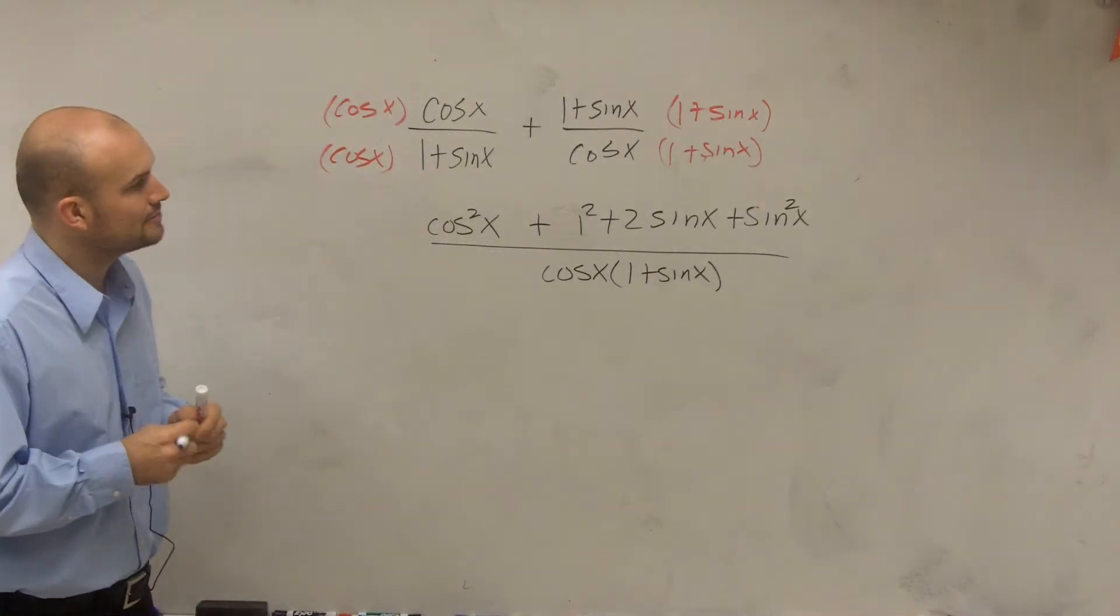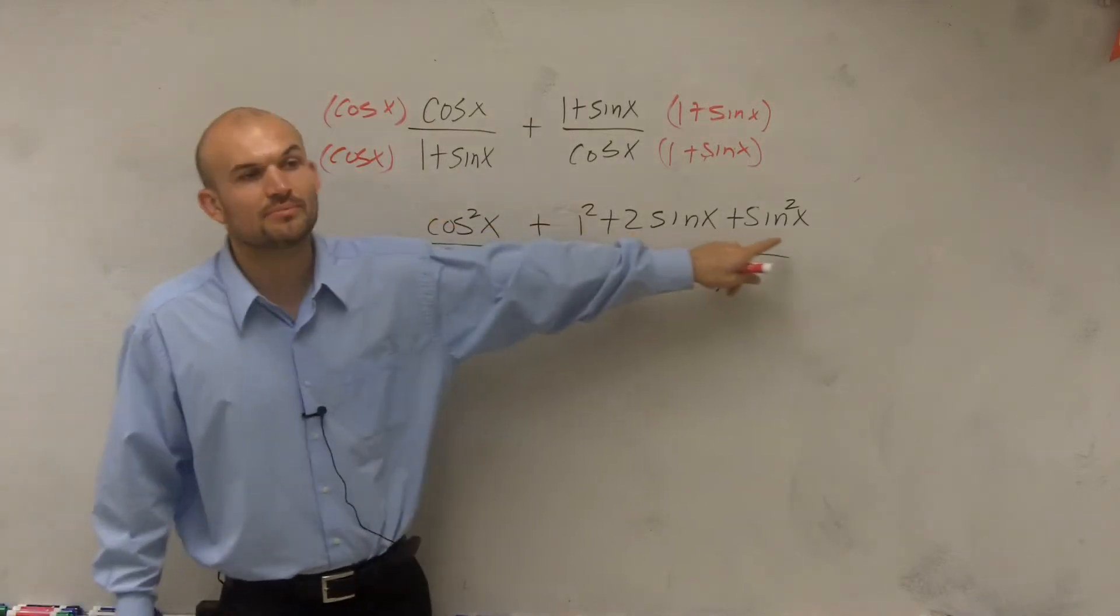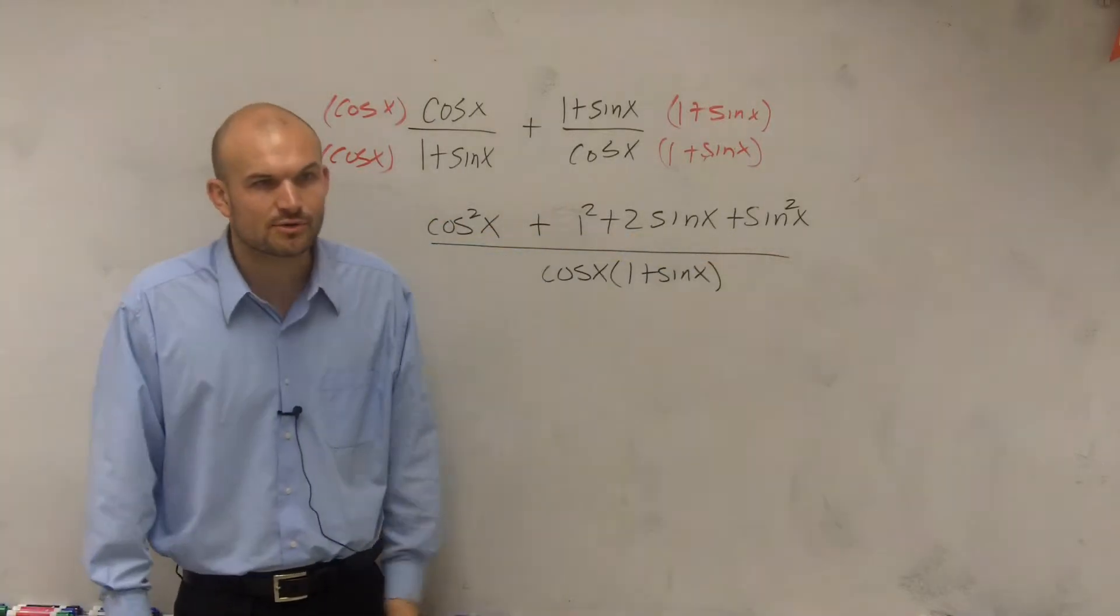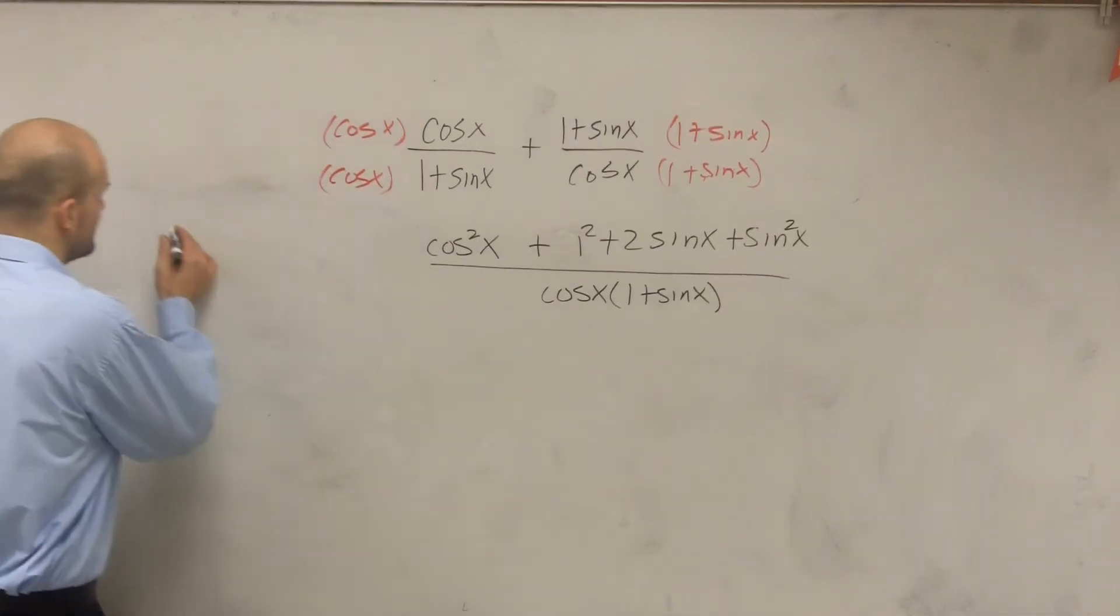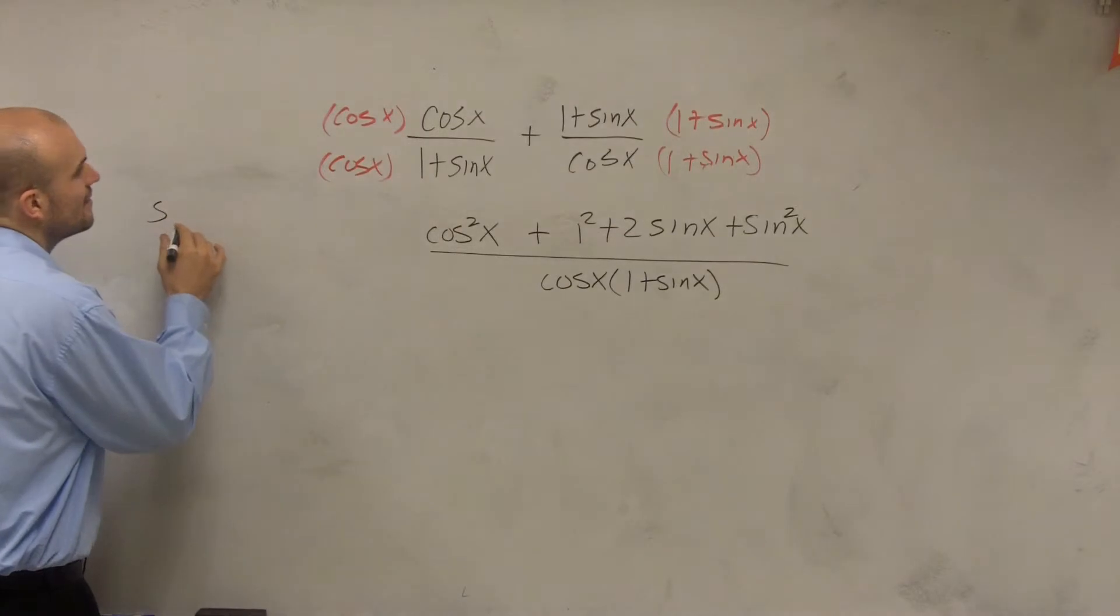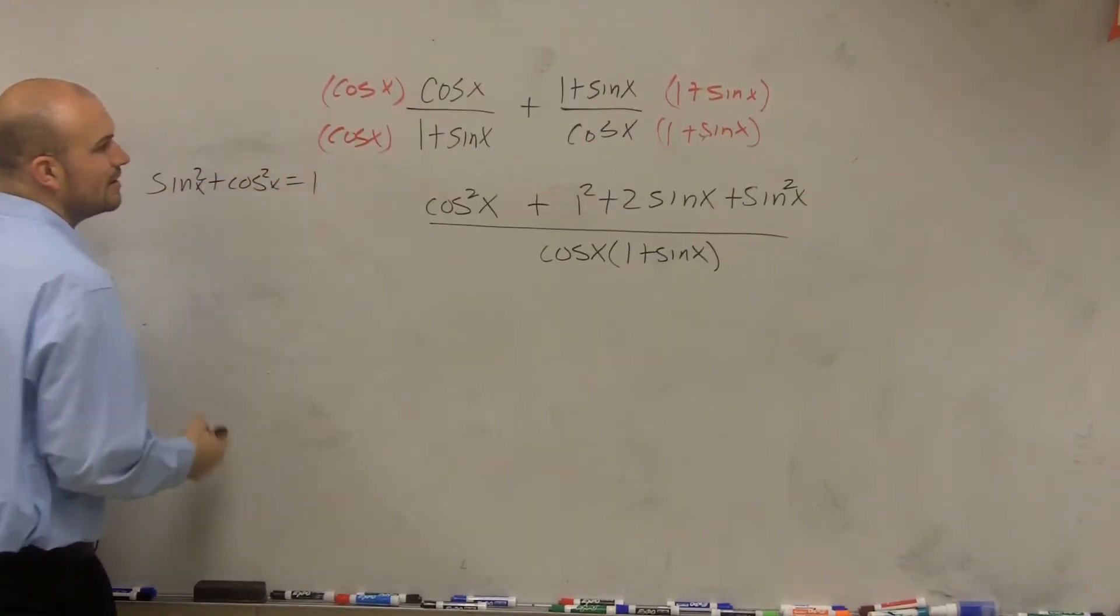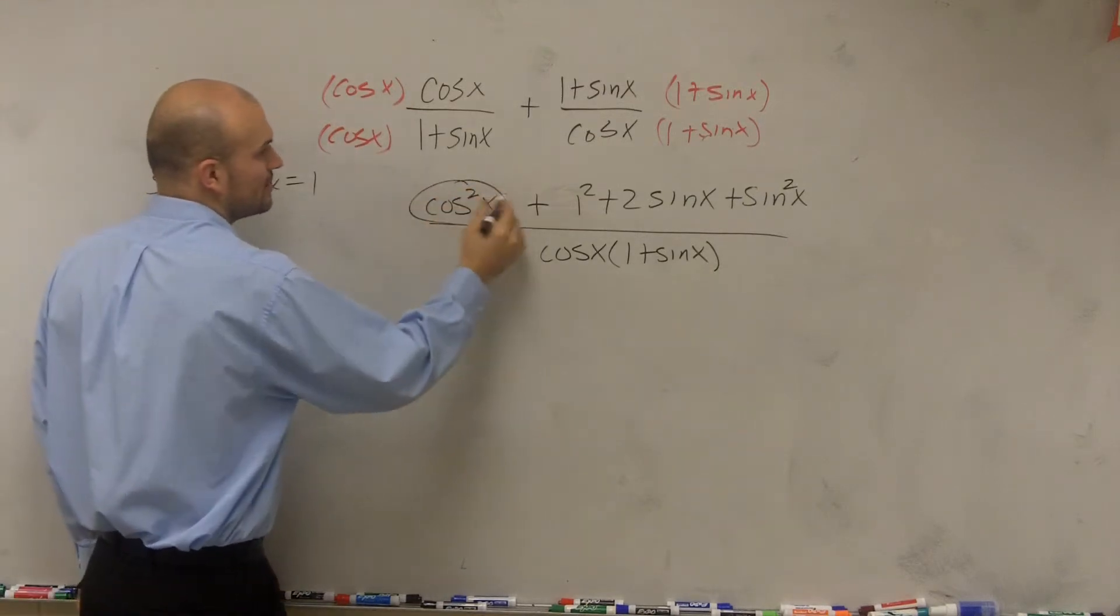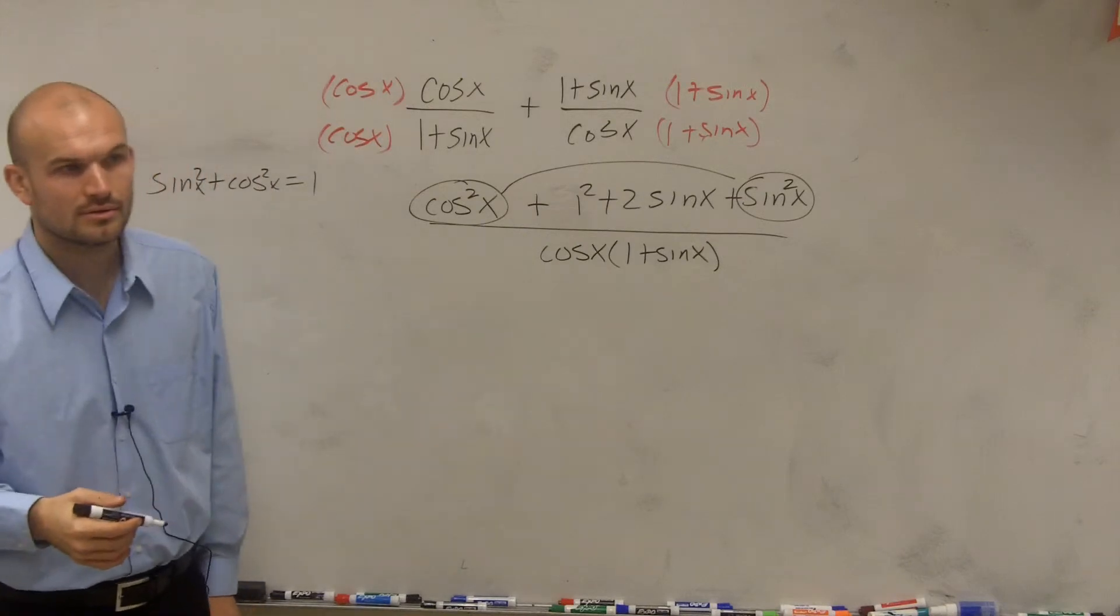All right, so by looking at this now, I notice that I have a cosine squared plus a sine squared. I know that cosine squared plus sine squared equals... Pythagorean identity? Sine squared plus cosine squared of x equals 1. So therefore, this term is being added to this term, which adds up to 1.